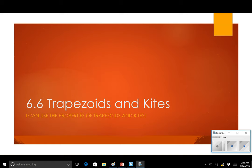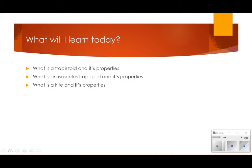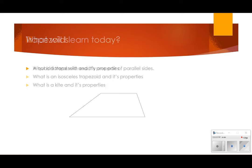This is the last kind of special quadrilaterals we're going to talk about today: trapezoids and kites. You're going to learn the definition of those, the different properties, and then how to solve problems using those.